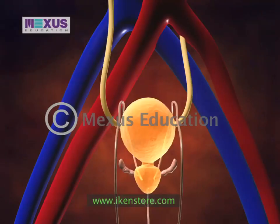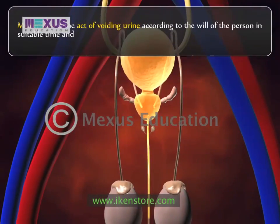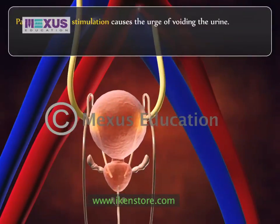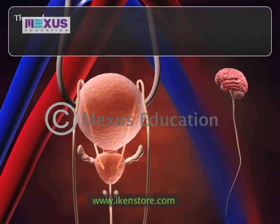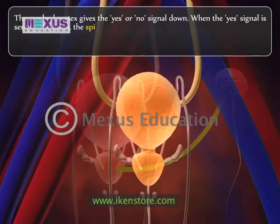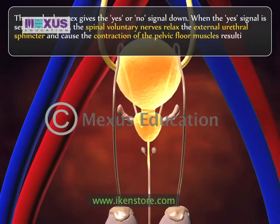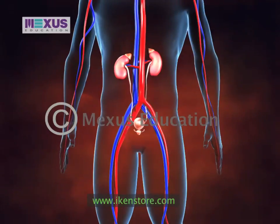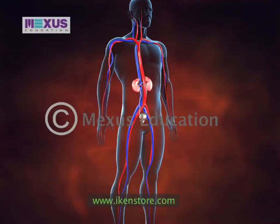Micturition is the act of voiding urine according to the will of the person at a suitable time and place. Parasympathetic stimulation causes the urge to void urine. When the bladder gets full, the message is sent to the cerebral cortex via the spinal cord. The cerebral cortex gives a yes or no signal in response. When the yes signal is sent, the spinal voluntary nerves relax the external urethral sphincter and cause contraction of the pelvic floor muscles, resulting in actual voiding of urine. The excretory system is thus responsible for regulating chemical balances, eliminating wastes and harmful substances, and ultimately maintaining good health.